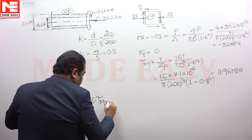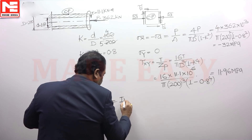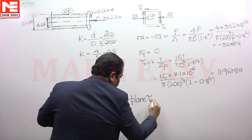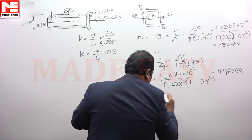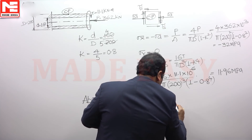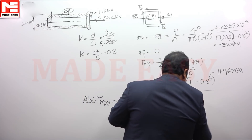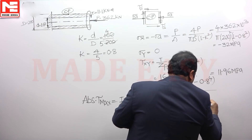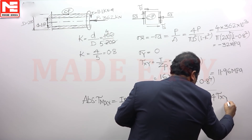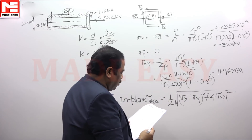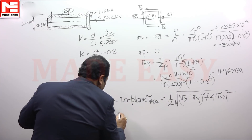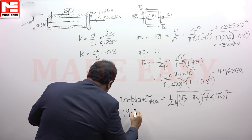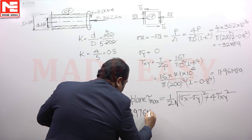Whenever sigma y is 0, the absolute maximum shear stress equals the in-plane tau max, which is given by the radius of the Mohr's circle. This is the expression for the radius of the Mohr's circle. By substituting the given data, absolute tau max equals 19.976 MPa.